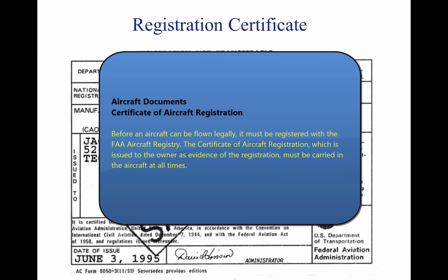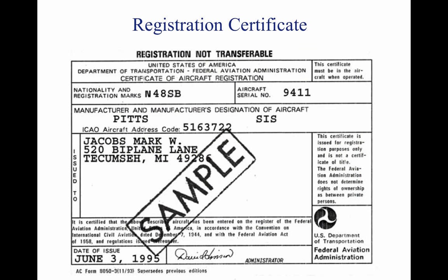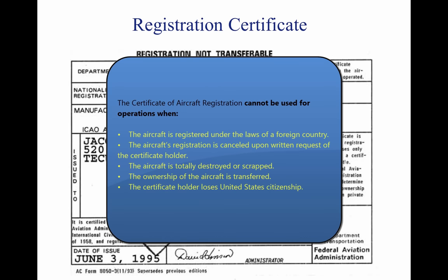Aircraft Documents: Certificate of Aircraft Registration. Before an aircraft can be flown legally, it must be registered with the FAA Aircraft Registry. The Certificate of Aircraft Registration, issued to the owner as evidence of the registration, must be carried in the aircraft at all times. It cannot be used for operations when the aircraft is registered under the laws of a foreign country. The aircraft's registration is cancelled upon written request of the certificate holder, if the aircraft is totally destroyed or scrapped, if ownership is transferred, or if the certificate holder loses United States citizenship.